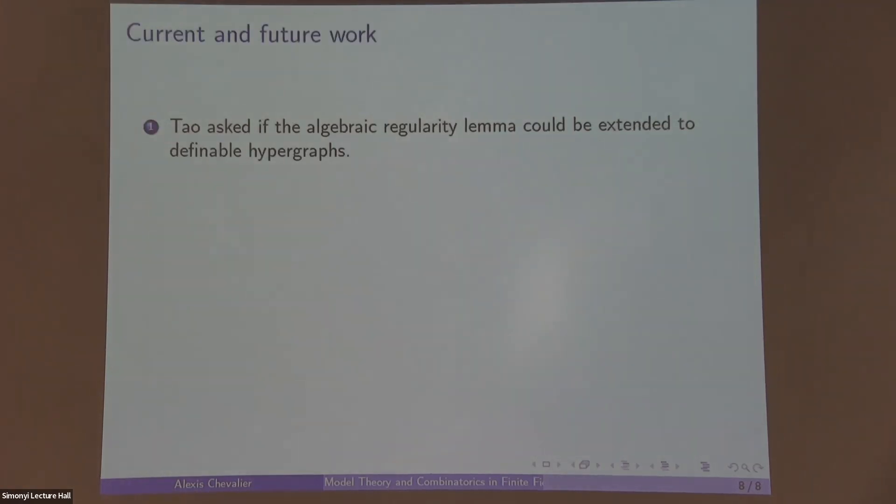Okay, so now we can talk about current and future work. In the original Tao paper, Tao asked if the algebraic regularity lemma could be extended to definable hypergraphs. So this was answered effectively in a work I did with Levi. There were lots of interesting technical details. Maybe you should say caveats. It turns out, for example, the partitions of the hypergraphs are not definable in the classical sense. There's some itol business which creeps in. The error bounds are not as good as what we would have hoped, et cetera, et cetera. But essentially this turns out to be true.